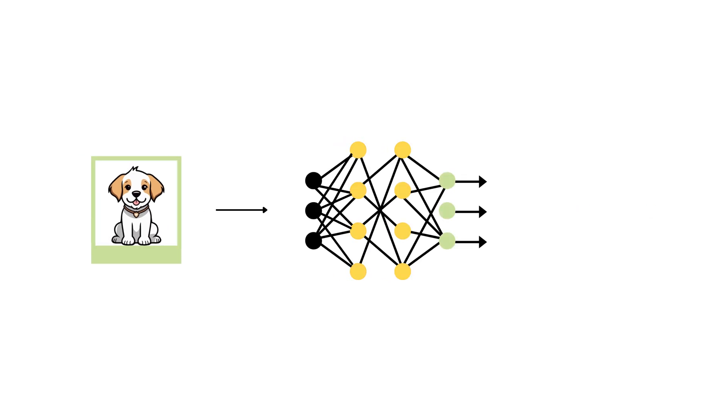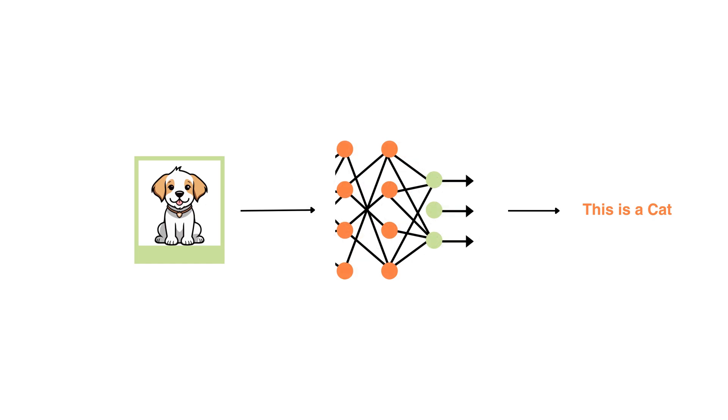The network compares its prediction to the actual answer. Maybe it was supposed to be a cat. So it calculates how wrong it was using a loss function. Here's the magic: backpropagation takes that error and sends it backward through the network. It figures out which weights were responsible for the error.